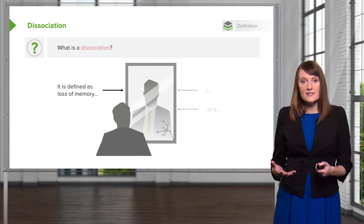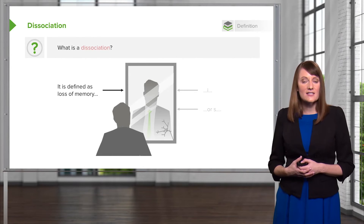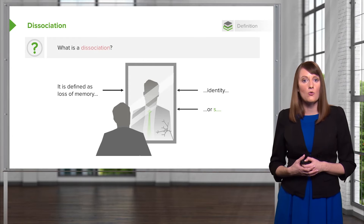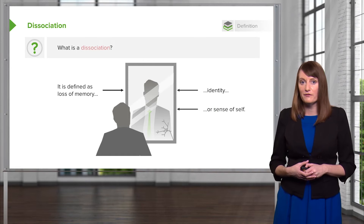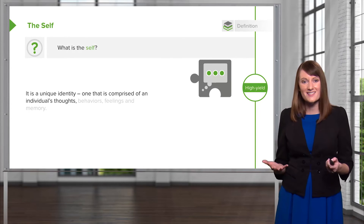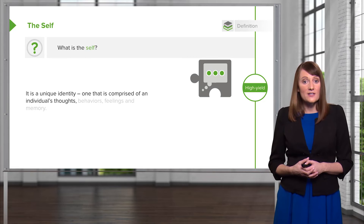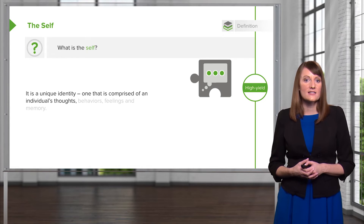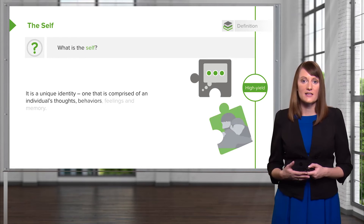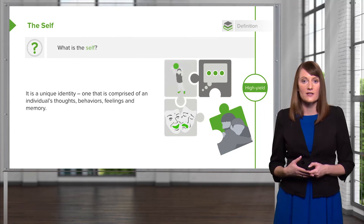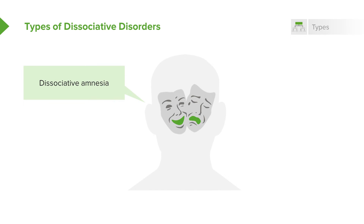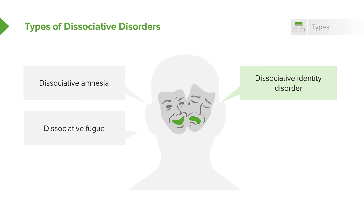So what is dissociation? It is defined as loss of memory, identity, or one's sense of self. The self is a unique identity that we all have — one comprised of our individual thoughts, behaviors, feelings, and memories. There are different types of dissociative disorders: dissociative amnesia, dissociative fugue, dissociative identity disorder, and depersonalization-derealization disorder.